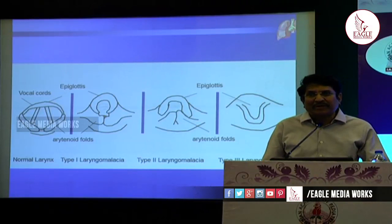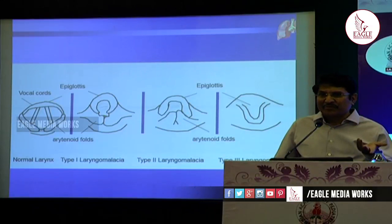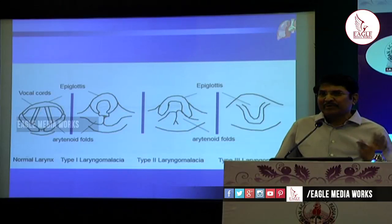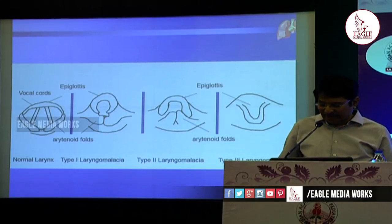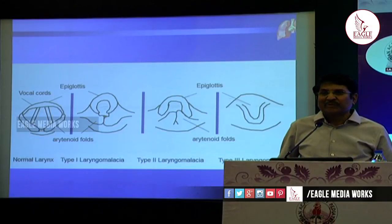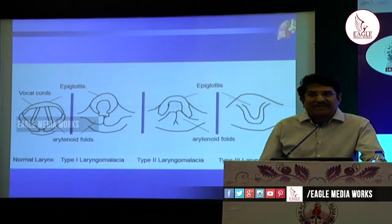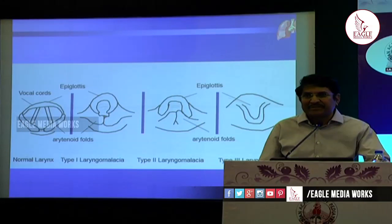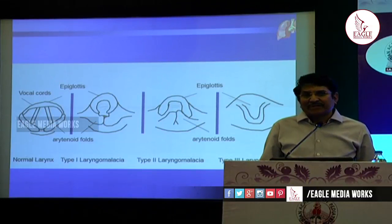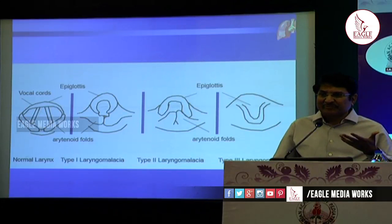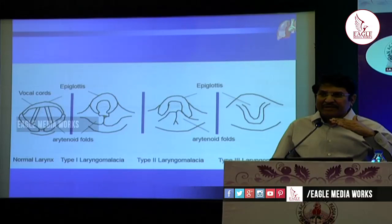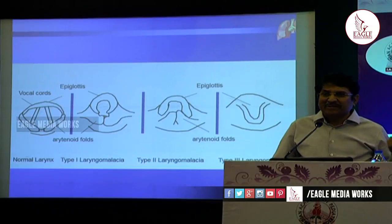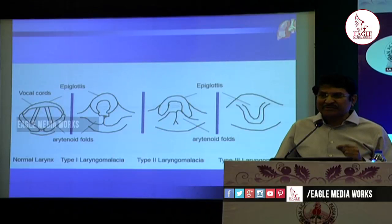Type 2: epiglottis is normal but arytenoids and their mucosa are prominent so they fall onto the glottic area. Type 3: only epiglottis is involved — it is long, flabby, and falling onto the glottis with each respiration. Why is this child normal for the first three weeks? In laryngomalacia, the first three weeks there is no distress because the inspiratory pressures are not sufficient. As inspiratory pressures increase, the distress starts with stridor. Also, when the child takes a breath against a closed glottis, they develop negative pressure, and all these cases are associated with gastroesophageal reflux.